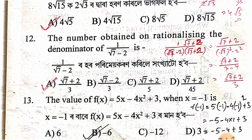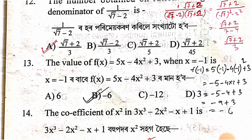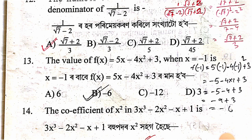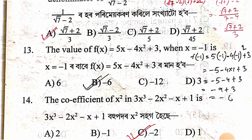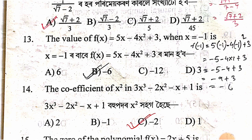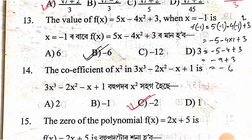The value of f(x) = 5x − 4x + 3 when x = −1: substituting x = −1 gives the answer, option C, which is −6.